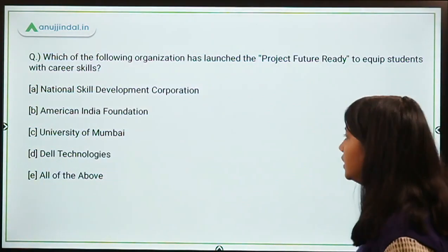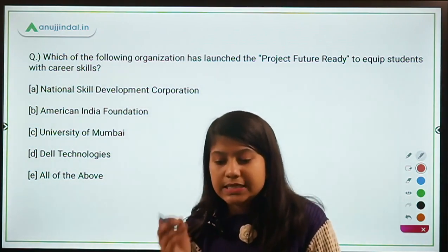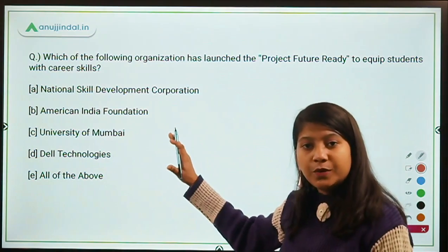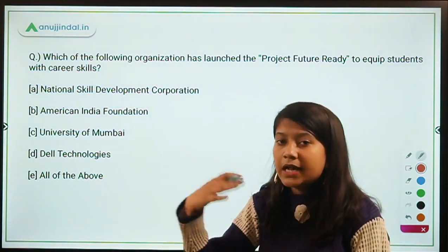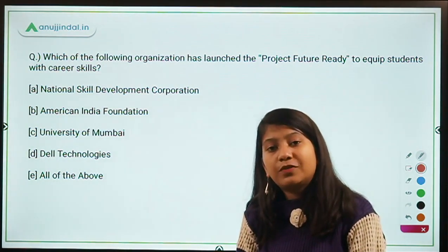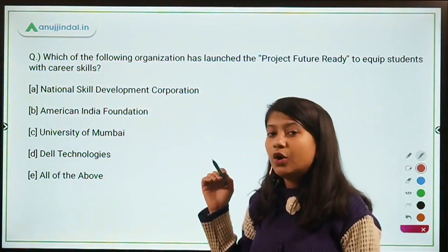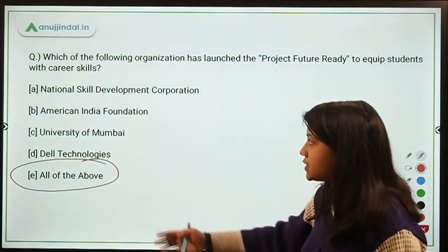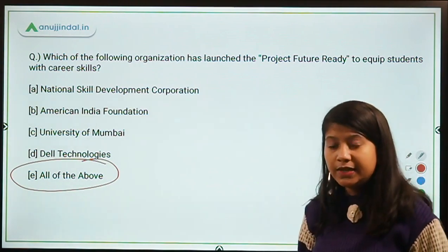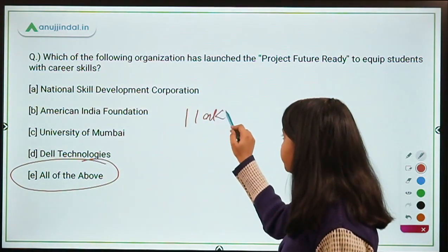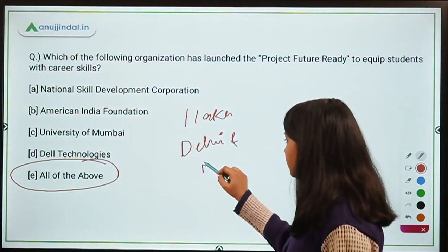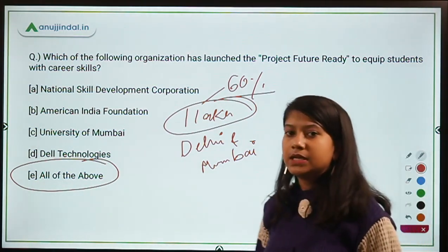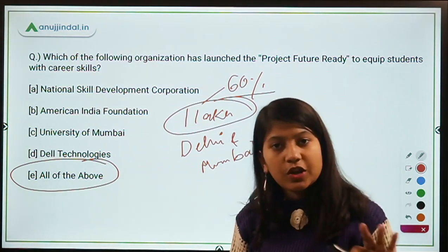Which organization has launched Project Future Ready to equip students with career skills? The purpose is clear from the name — being future-ready by equipping yourself with skills. The answer is Option E, All of the Above — all four organizations collaborated to launch this project. Project Future Ready targets one lakh students, specifically in Delhi and Mumbai, with 60% being female students.